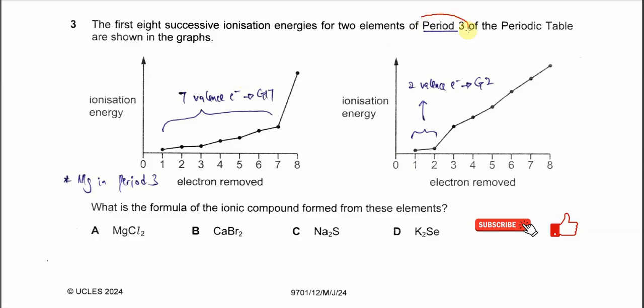For the first element on the left, we can see that after the seventh ionization energy there is a big jump. When there is a big jump, we know something significant is happening.